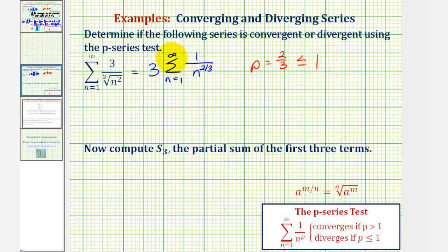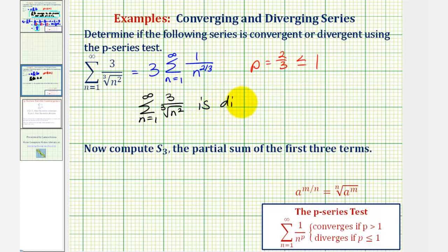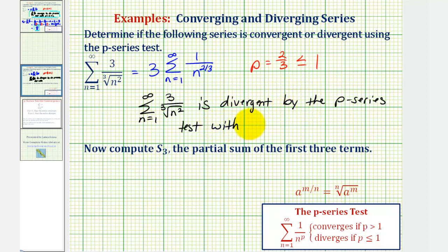So if this infinite series diverges, three times the divergent series is also divergent. And therefore the original series is divergent by the p-series test with p equals two-thirds, which is less than or equal to one.